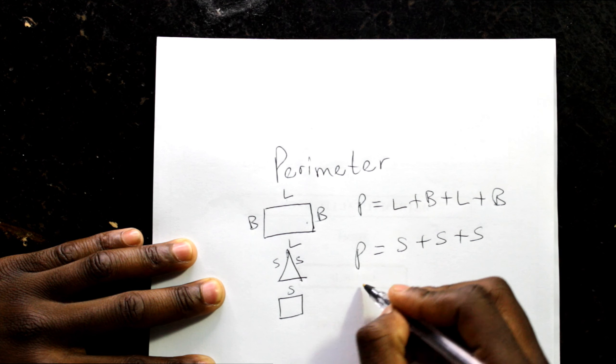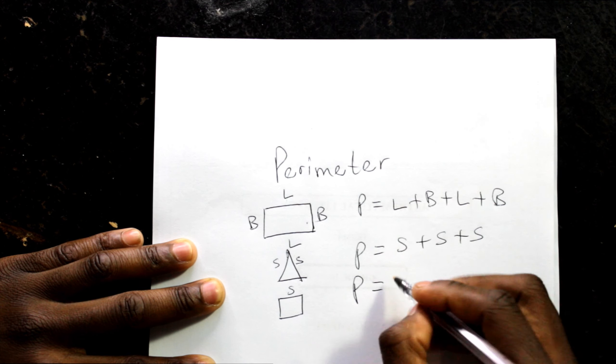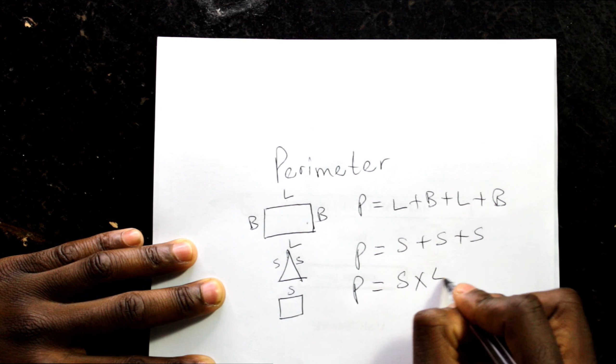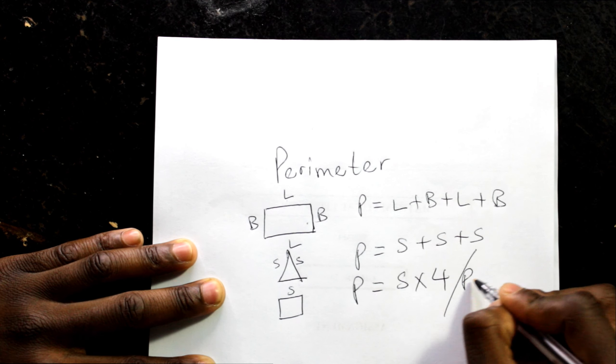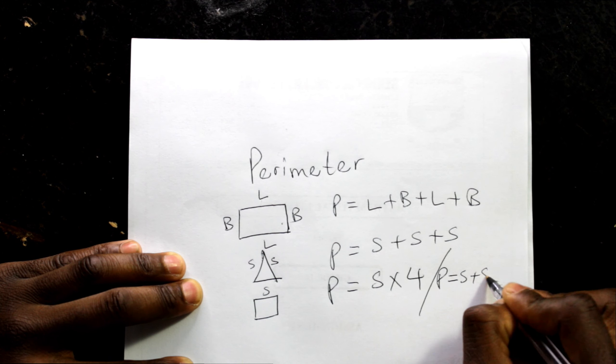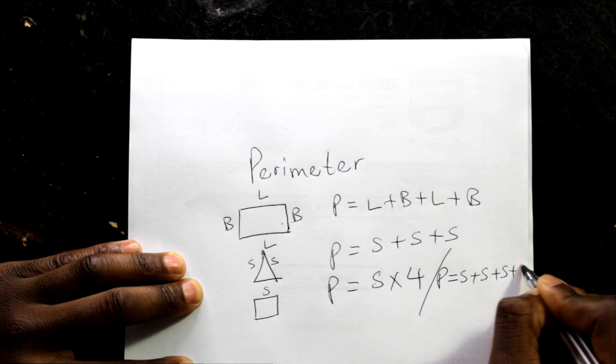For a square, perimeter will say side times 4. Or perimeter: side plus side plus side plus side.